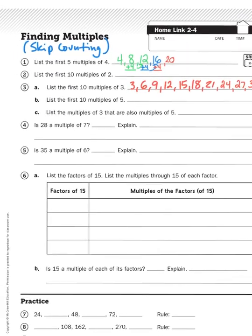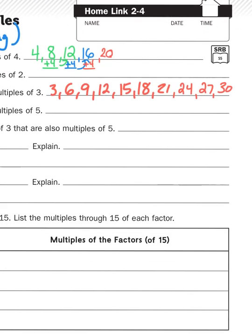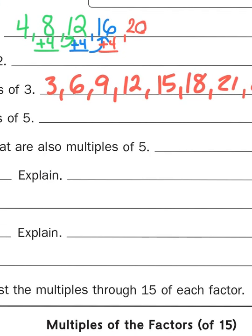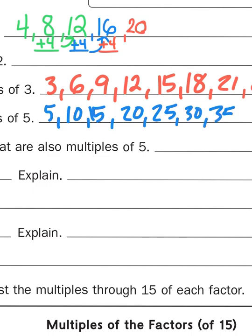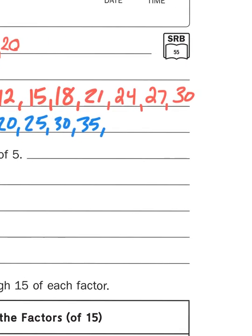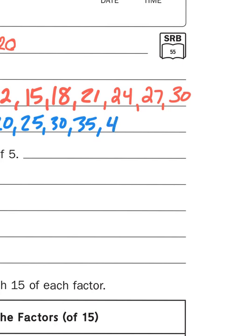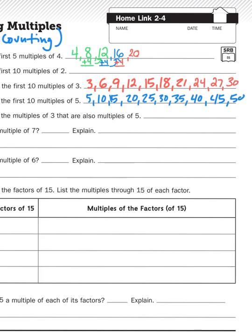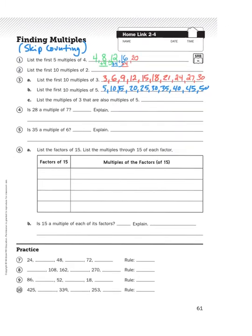So now it says, list the first 10 multiples of 5. Now that's an easier one. I'm going to skip count by 5's here. 5, 10, 15, 20, 25, 30, 35, 40, 45, 50. So now I've got the first 10 multiples of 3 and the first 10 multiples of 5.